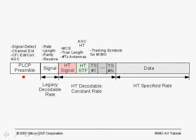Since, in general, the legacy devices can decode up to the signal field, there will be a specification for the length and rate in the legacy signal field. In those cases, the legacy devices will be able to use the length and the rate in order to know the total length of the packet, even though it is unable to decode the high throughput packet.